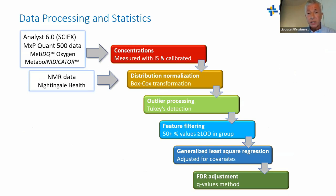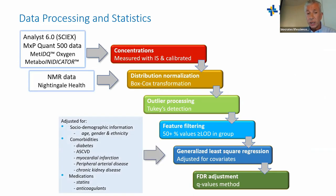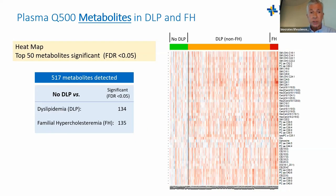Our data processing and statistics workflow used MetIDQ and Analyst to quantitate metabolites from the Quant 500. NMR data was provided by Nightingale. We then performed distribution normalization, outlier processing, feature filtering, and generalized least squares regression adjusted for sociodemographic information, comorbidities, and medications, with final FDR adjustment using the q-value method.